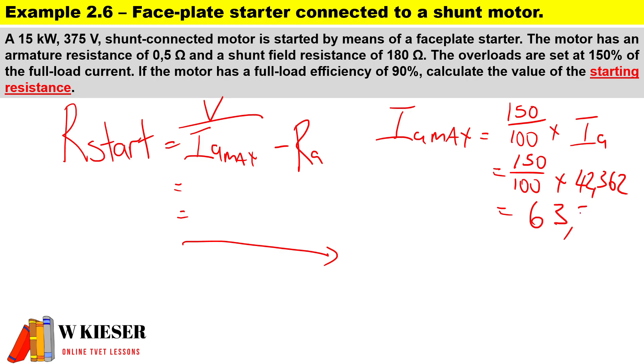Now that we've got Ia max, we can actually calculate the value of the start resistance. The terminal voltage is 375 divided by Ia max, 63.543, minus the armature resistance, which is the smaller resistance of 0.5. Therefore, the value of the resistance connected in series with the armature will be 5.402 ohms.